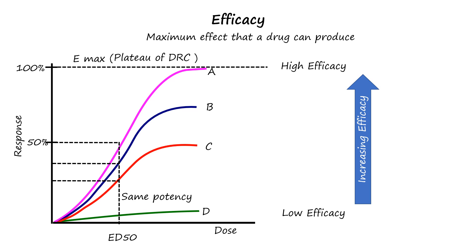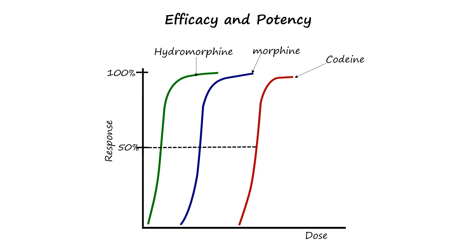Usually, full agonists have high efficacy as they produce a maximum receptor response, while partial agonists have lower efficacy as they produce a submaximal response. Here is another dose-response curve of opioids — all with similar efficacy but different potencies. Although these drugs act on opioid receptors, differences in their chemical structures and pharmacokinetics result in varying potencies.